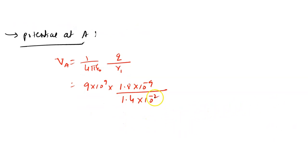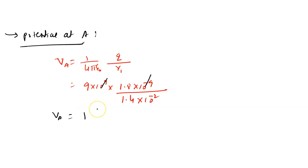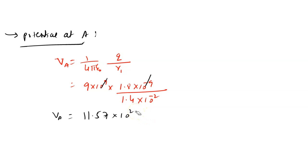After simplification, cancelling powers, we get VA equals 11.57 × 10² volt. This is the potential at A.